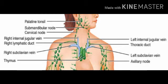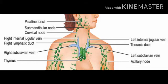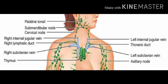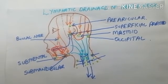Inside the chest, on the right-hand side, the deep cervical lymph nodes drain into the right lymphatic duct, which then empties into the right subclavian vein. On the left side, the deep cervical lymph nodes drain into the thoracic duct, which empties into the junction of the left subclavian vein and the left internal jugular vein. So all the lymph ends up emptying into the blood and entering into the vena cava.